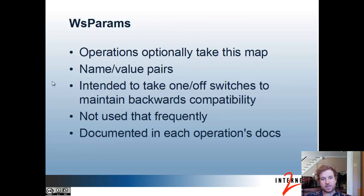All operations — light and batched — take in a WS params input, which is a map of name-value pairs. It's intended for one-off switches for operations, to hold options that weren't originally thought of but were added later. Those structures are in the WSDL or spec to maintain forward compatibility. However, they're not used all that frequently because new input params can be added without affecting backwards compatibility. If they are used, it's documented in each operation's docs.